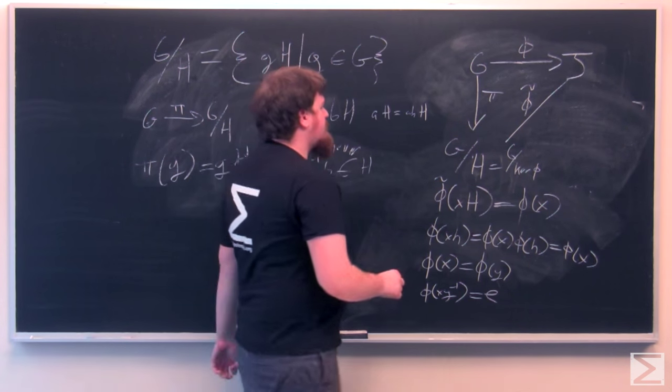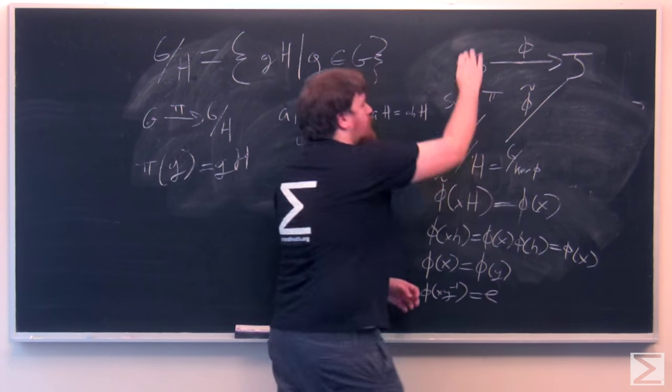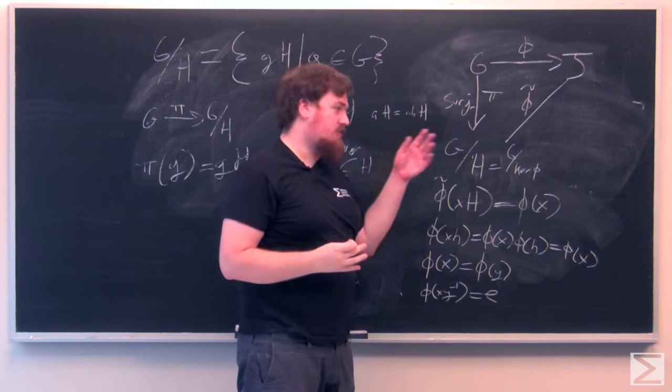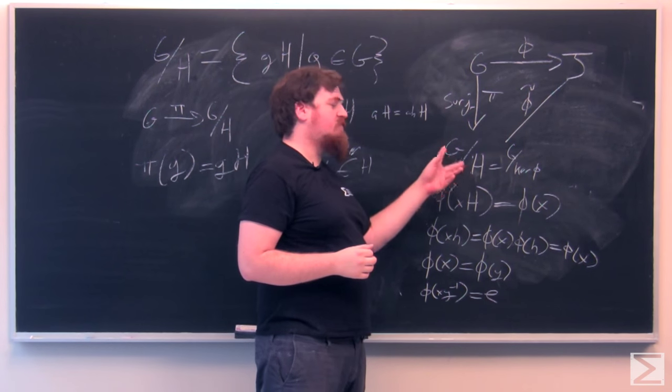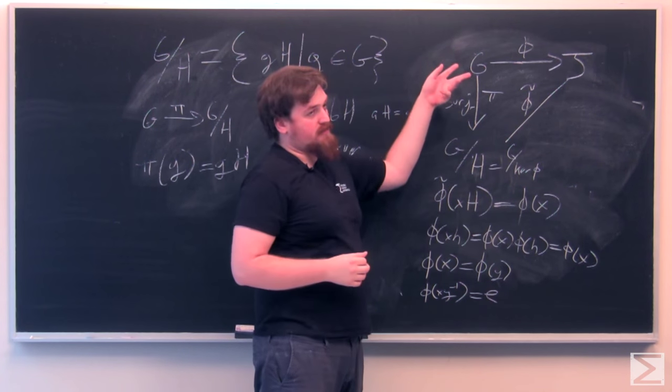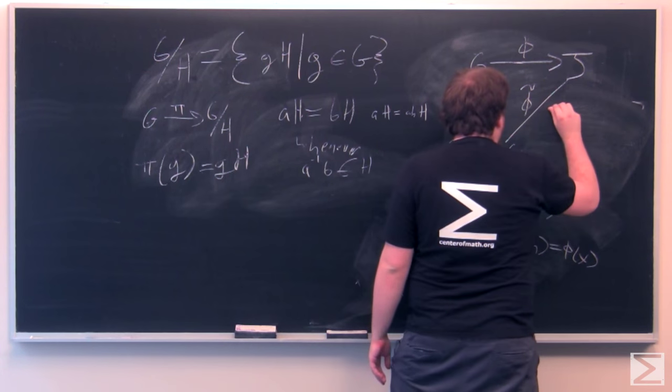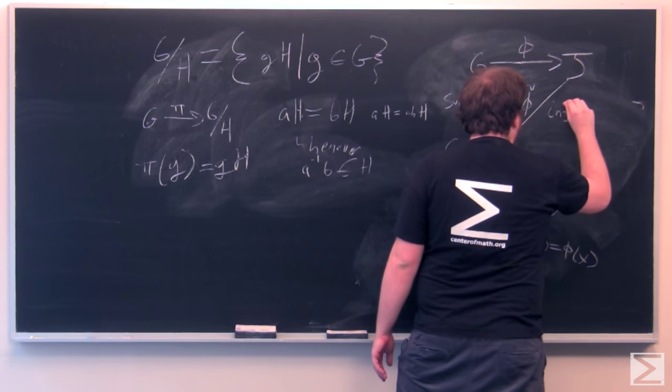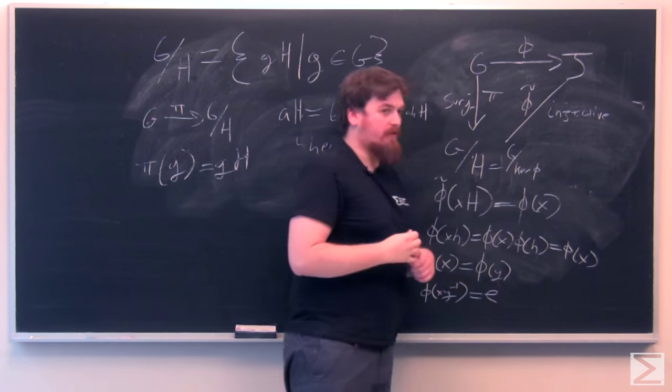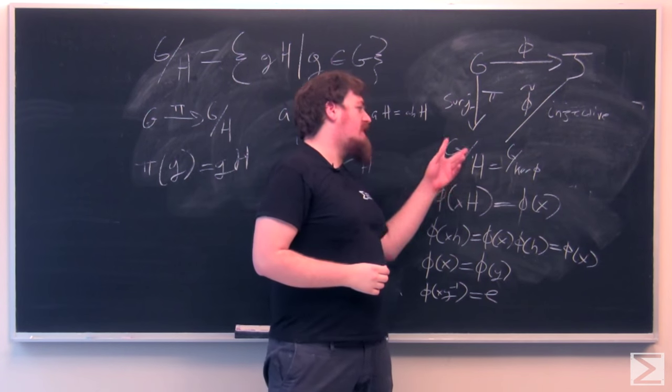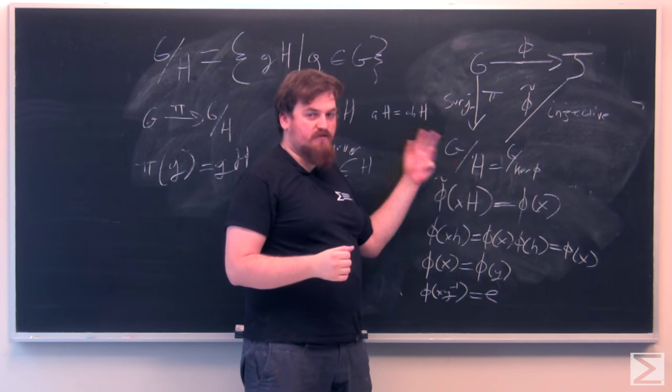So if you have two different cosets in G mod H, those will be sent to different elements of J by phi tilde. And this means that while pi is surjective in that it's onto and that every element of G mod H is sent to by some element of G, phi tilde is an injective homomorphism, which itself has kernel just the identity element of G mod H.